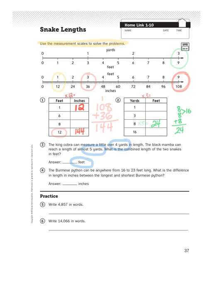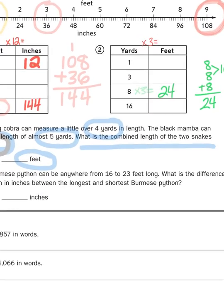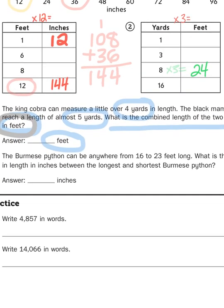The king cobra can measure a little over 4 yards in length. The black mamba can reach a length of almost 5 yards. What is the combined length of the two snakes in feet? See, right there they want to see if you're paying attention. You're going to have to convert your answer to feet. So first you have to add the yards together. Well, that's pretty simple, it's just 4 yards plus 5 yards. 4 plus 5, of course, is 9.